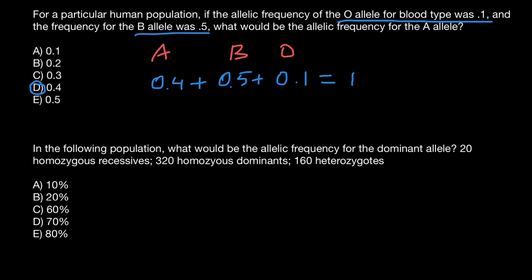So let's write down right away. Homozygous recessive we have 20, and we have 320 homozygous dominant. So genotype would be capital A, capital A, 320, and heterozygous is 160.